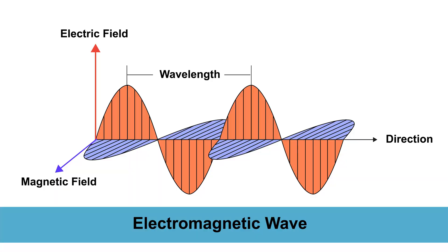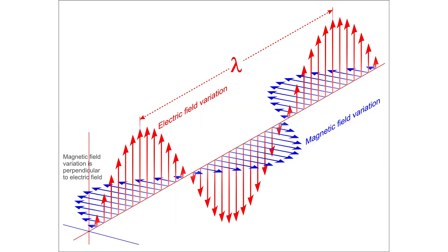So what is light anyway? Light is an electric field oscillating and a magnetic field also oscillating. You can see in this picture you have an electric field, which is a sine wave, and a magnetic field, which is a sine wave, oriented 90 degrees relative to each other.